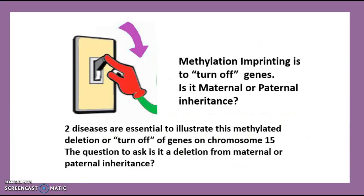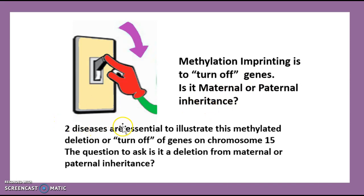Prader-Willi vs. Angelman syndrome. What is going to occur here is there's going to be a methylation imprinting which is going to turn off the genes. When you're looking at this, you're going to want to figure out whether it's from the maternal or the paternal side. The two diseases are essential to illustrate this methylated deletion on chromosome 15. Let's figure out how we differentiate between the two.